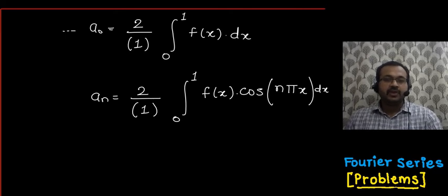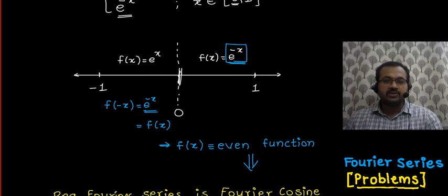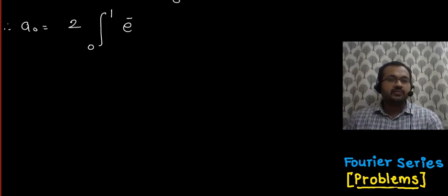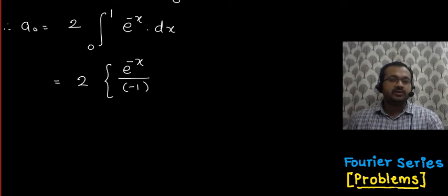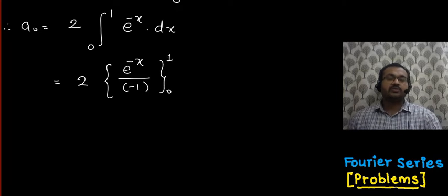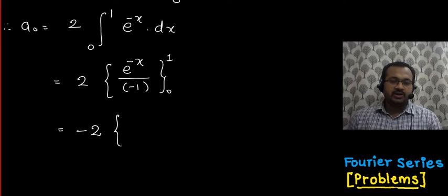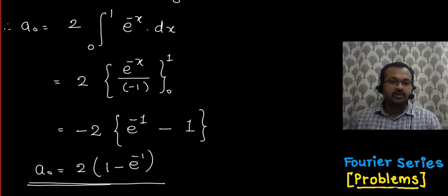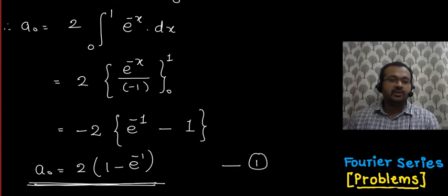In the range 0 to 1, the function is e raised to minus x. So a₀ = 2 times the integral from 0 to 1 of e raised to minus x dx. Evaluating: this equals e raised to minus x divided by minus 1, evaluated from 0 to 1. Taking minus 2 outside: at the upper limit we get e raised to minus 1, minus e raised to 0 at the lower limit. Simplifying, a₀ = 2(1 − e⁻¹). This is equation (1).